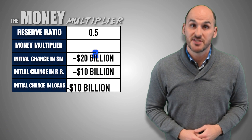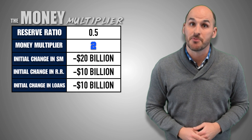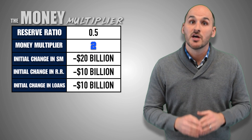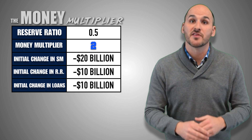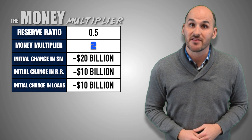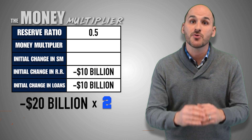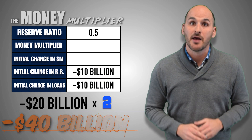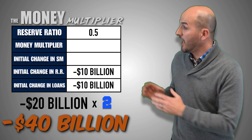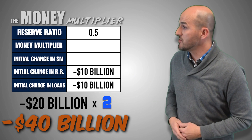Combined with the initial money decrease of $20 billion, the selling of bonds in the open market by the Federal Reserve could potentially decrease the money supply by as much as $40 billion.